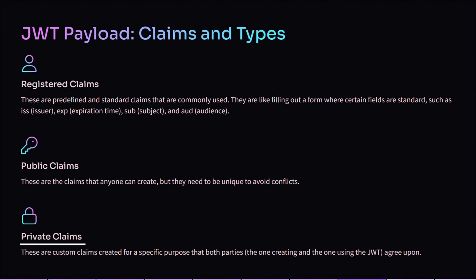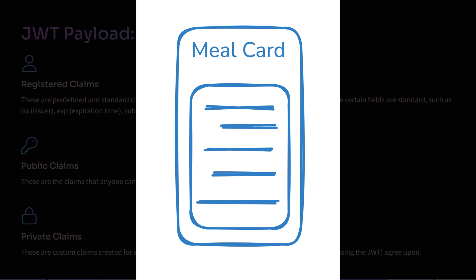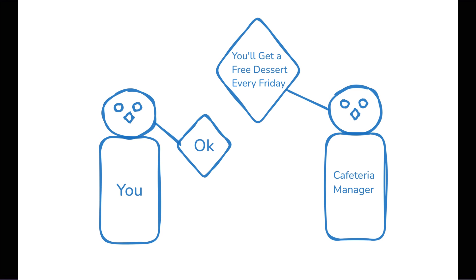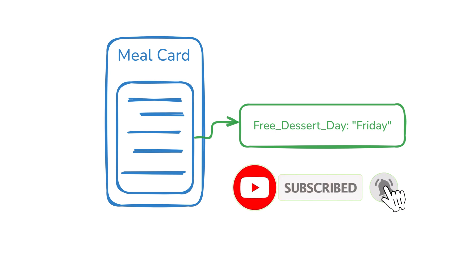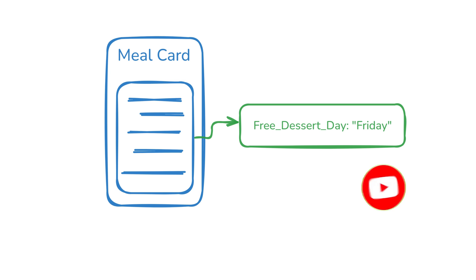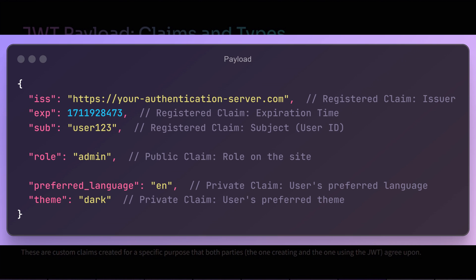Lastly, we have private claims. These are custom claims created for a specific purpose that both parties — the one creating and the one using the JWT — agree upon. For example, imagine a lunch card at the office used to pay for meals. You and the cafeteria manager have an agreement that every Friday you get a free dessert. The lunch card might have a private claim like 'free_dessert_day' with value 'Friday'. This claim is something only you and the cafeteria manager know and use — a special agreement between you two, not relevant to other employees.